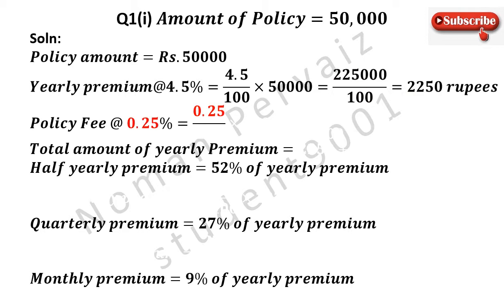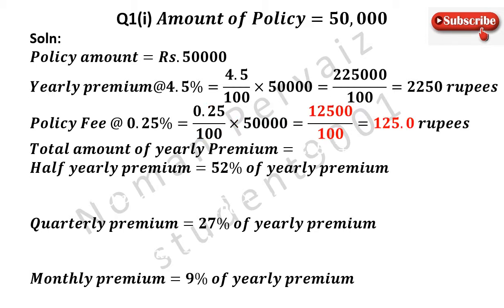Now we have to calculate policy fee at the rate of 0.25%. So 0.25% is written, percentage sign is removed by dividing the whole term with 100, multiplied by policy amount which is 50,000. 0.25 multiplied with 50,000 becomes 12,500, divided by 100 comes as it is. If we divide 12,500 by 100, then it becomes 125.0 rupees.